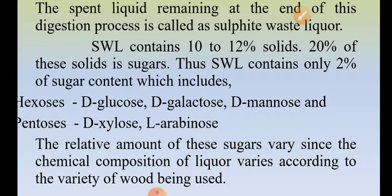The hexoses present in sulfite waste liqueur are D-glucose, D-galactose, and D-mannose. The pentoses are D-xylose and L-arabinose. The amount of sugar present in sulfite waste liqueur varies depending upon the composition of the liqueur.